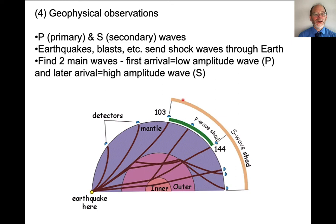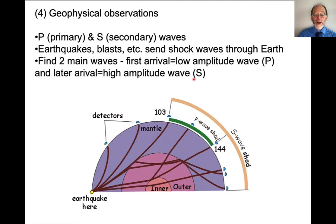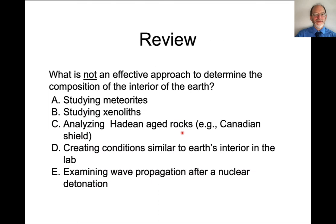The last primary way that we know about the interior of the Earth is through geophysical observations. We have two kinds of seismic waves: P waves and S waves, primary and secondary waves. Earthquakes and nuclear explosions, for example, send shock waves that propagate through the Earth. We can use the arrival of P waves — compressional waves — and S waves — shear waves — to figure out what the interior must look like. One of the ways we know the outer core exists in a liquid state is because of shadow zones that occur in S waves and P waves.